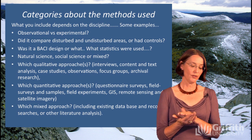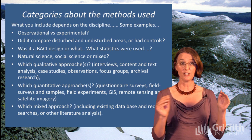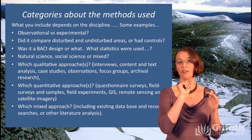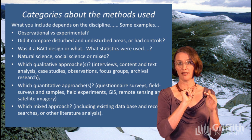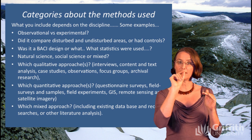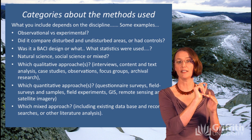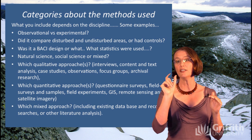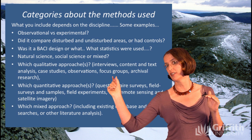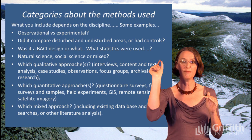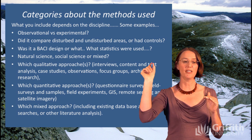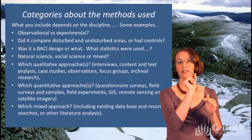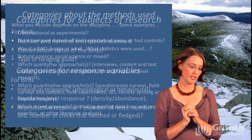Include information about what type of methods are used as columns in your database, because a lot of the value of a paper is the reliability of its methods. You might have summative categories like whether the research was quantitative or qualitative or both, and then go through each individual type: focus groups, in-depth interviews, text analysis, randomised control trials, BACI before-after control-impact, and so on.